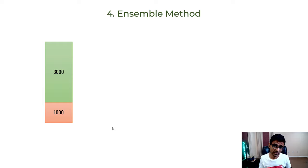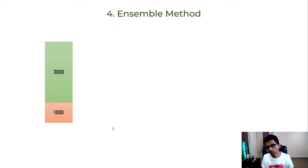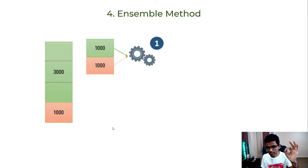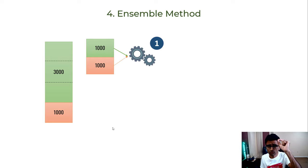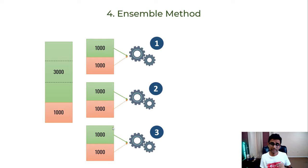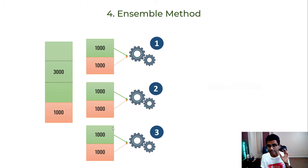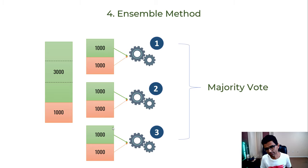The fourth technique is ensemble. Say you have 3,000 transactions in one class and 1,000 in another. You divide the 3,000 into three batches. Take the first batch, combine it with the 1,000 minority transactions, and build model one. Similarly, create model two and three. You then have three models and use a majority vote — similar to how random forest uses many trees and takes a majority vote.